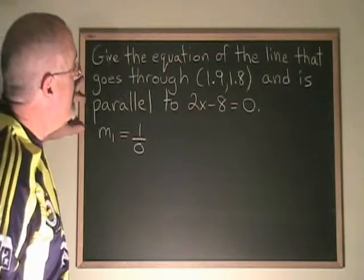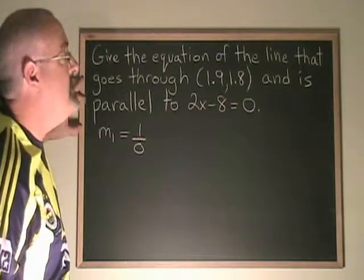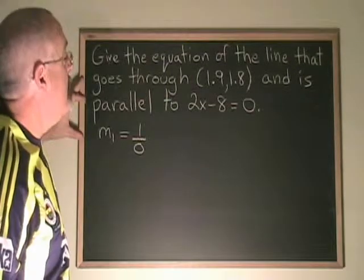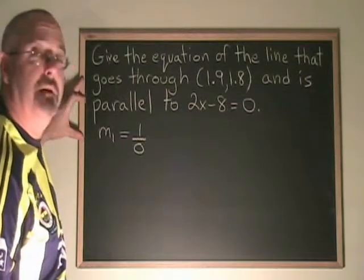In this example, we are asked to give the equation of the line that goes through the point 1.9, 1.8 and is parallel to the line 2x minus 8 equals 0.